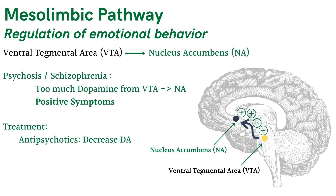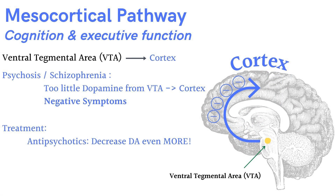The mesocortical pathway is known for cognition and executive functioning. Dopamine travels from the VTA, the yellow dot, to the cortex — associate cortex with the cortical pathway. In patients with schizophrenia or psychosis, there is too little dopamine reaching the cortex. This is when you see these patients have negative symptoms, such as affective flattening, poverty of speech, and avolition or apathy. Remember: cortical pathway, outside cortex, negative symptoms.